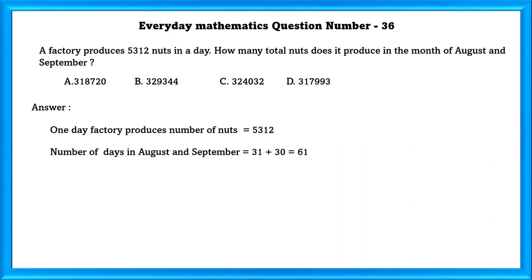Total months in August and September is equal to 31 plus 30 which is equal to 61. Number of nuts produced in August and September is equal to 3,24,032.